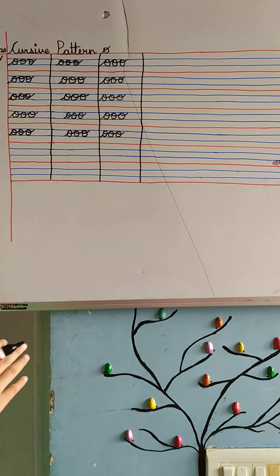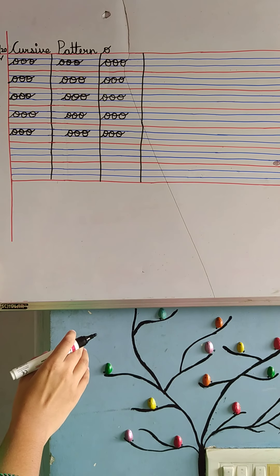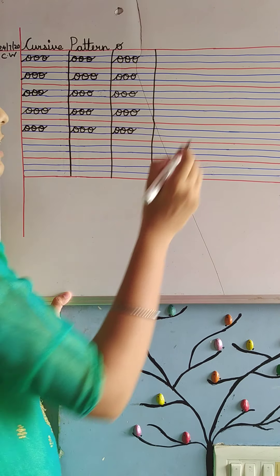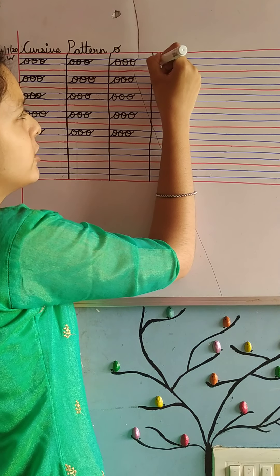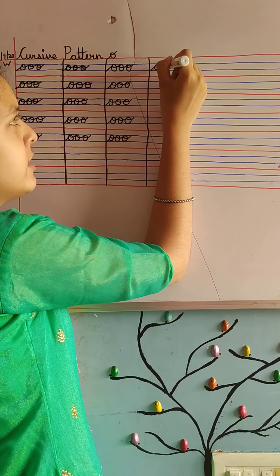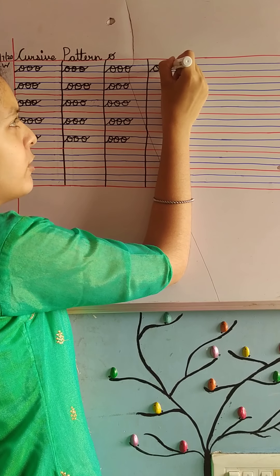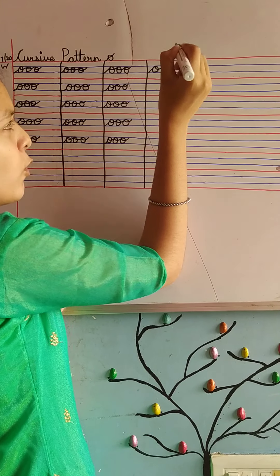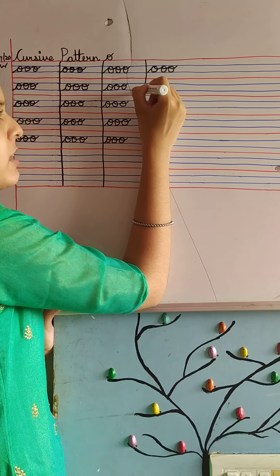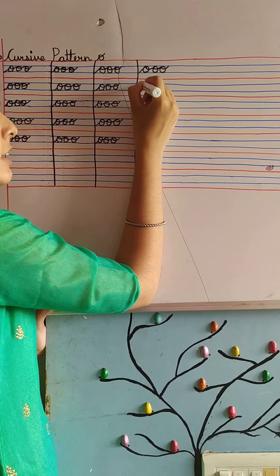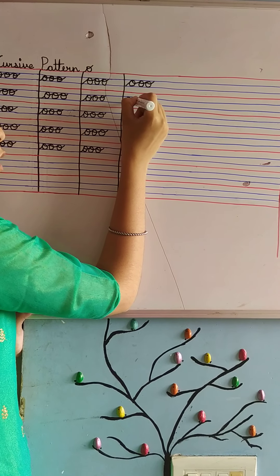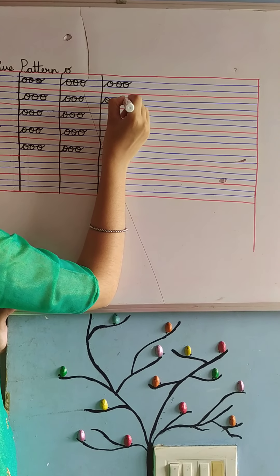And we will write again. Again, we will write for the fourth time — O, three times, without leaving the hand. O for orange. Again, touching the margin with the second blue line. O for octopus.